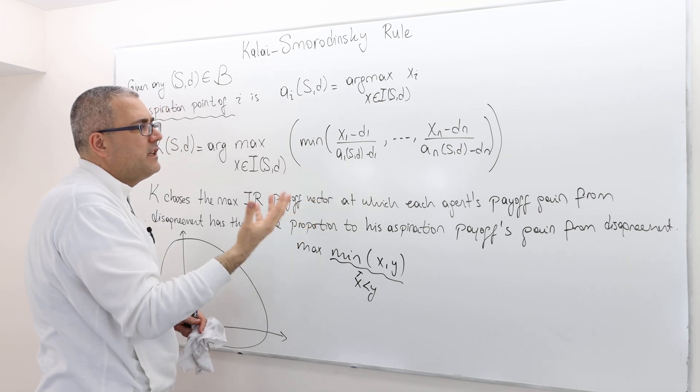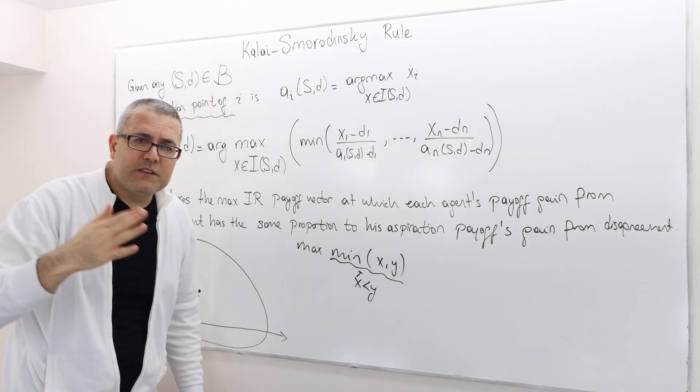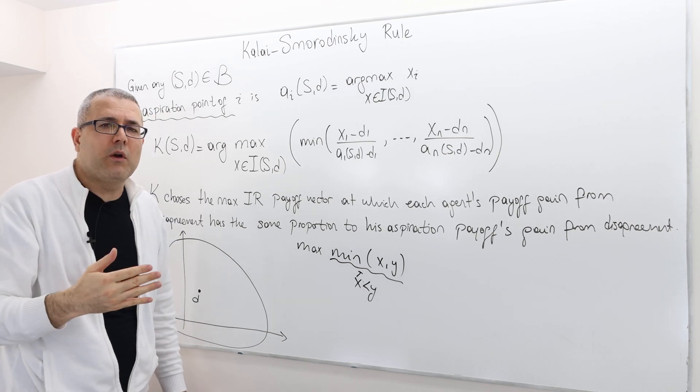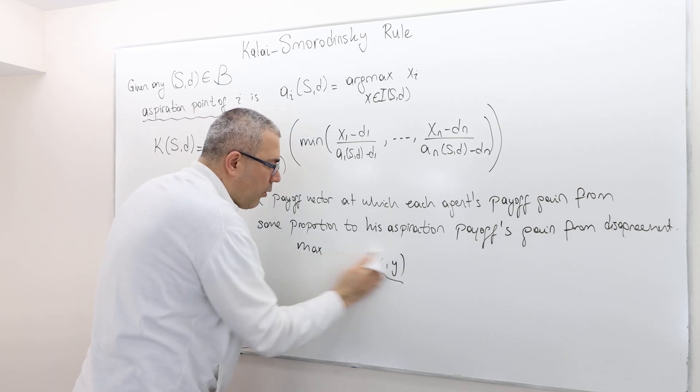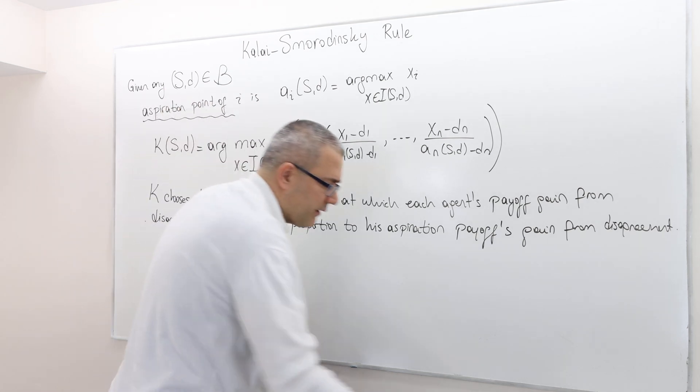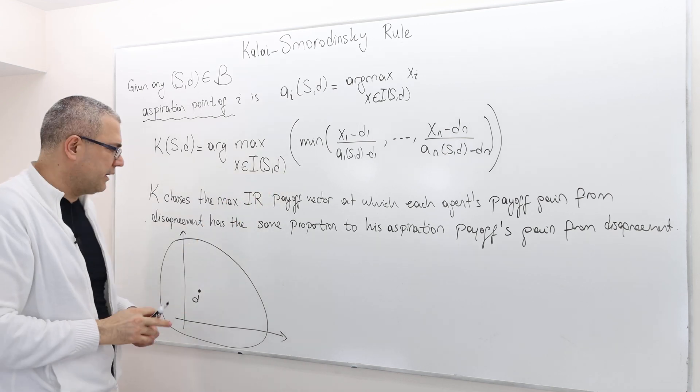This min function is basically trying to keep everybody's ratios in comparison to their aspiration point not too far off. They're either the same or very close to one another, as much as possible in this bargaining problem.